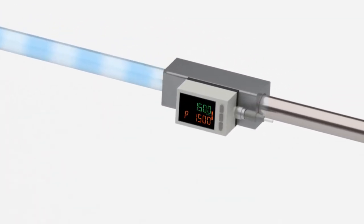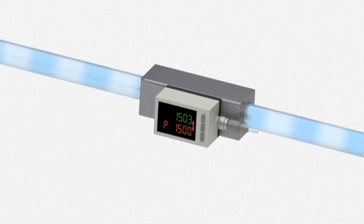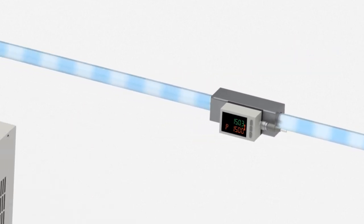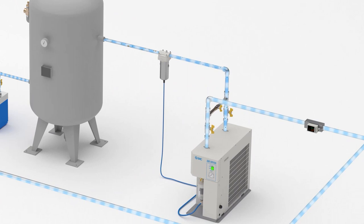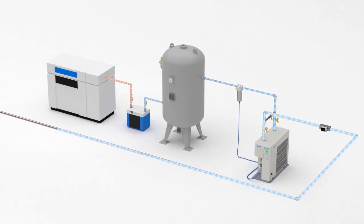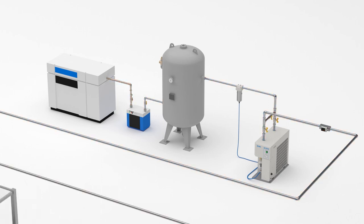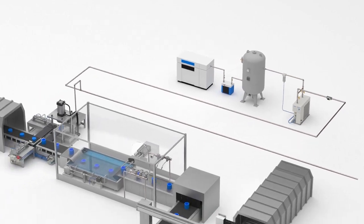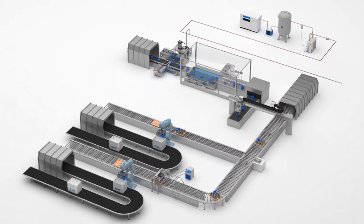The compressed air is now ready for delivery to the factory production lines, after the flow rate of the air is measured and monitored by a flow switch. A clean supply of compressed air is now available to power the various processes in the factory's production lines.